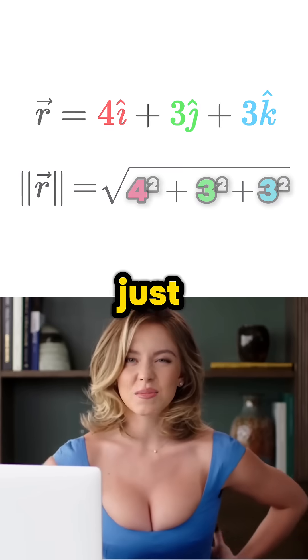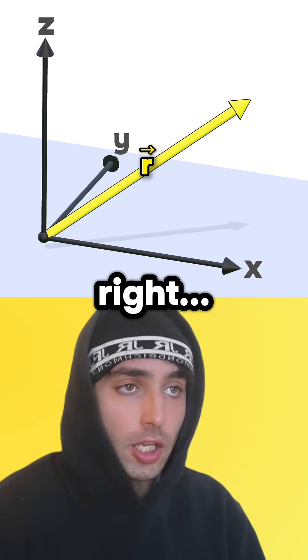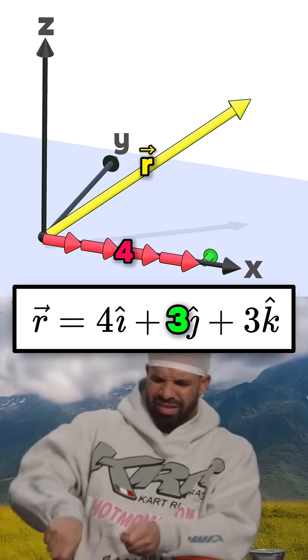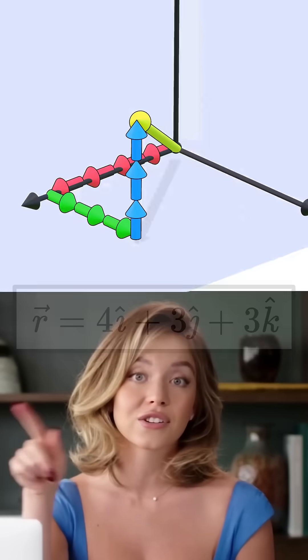So remember finding a vector's size just means finding its length, right? Right. And our vector r goes four steps in the x direction, three steps in the y, and three steps up in the z direction.